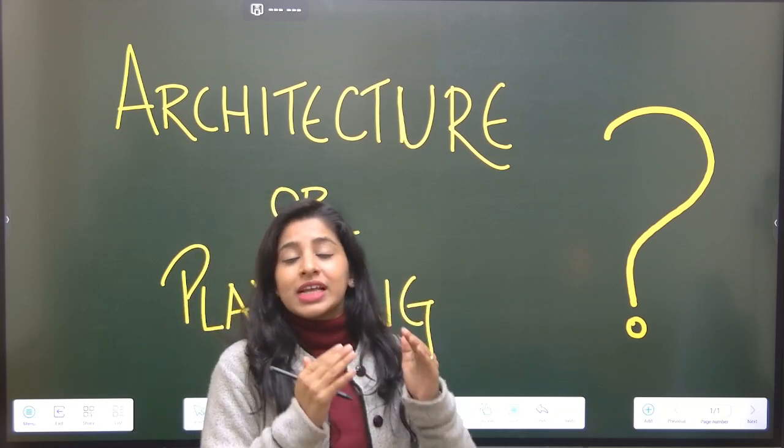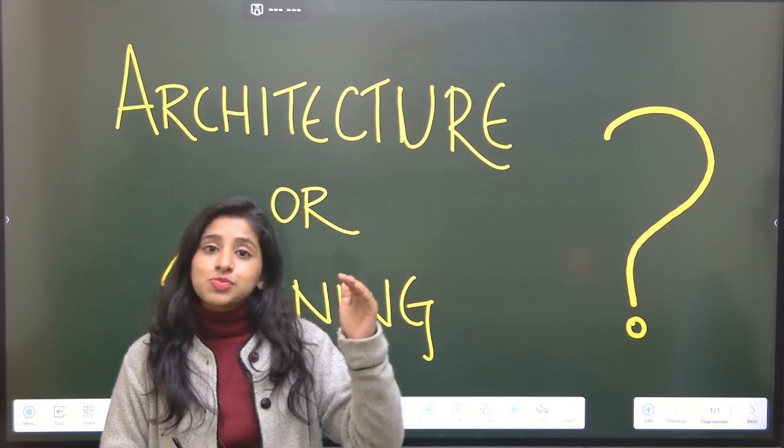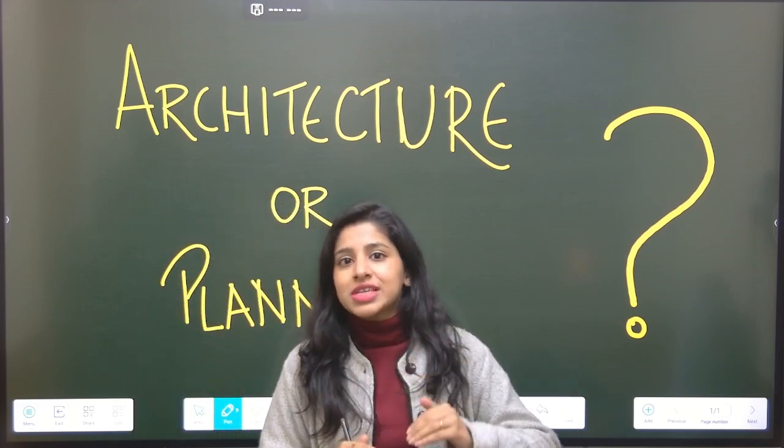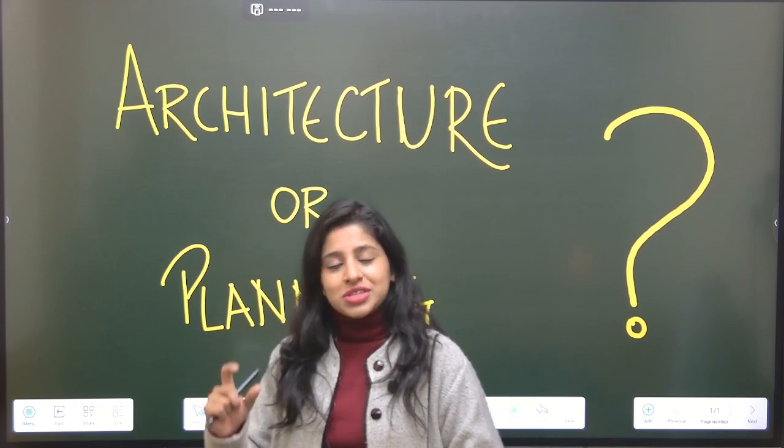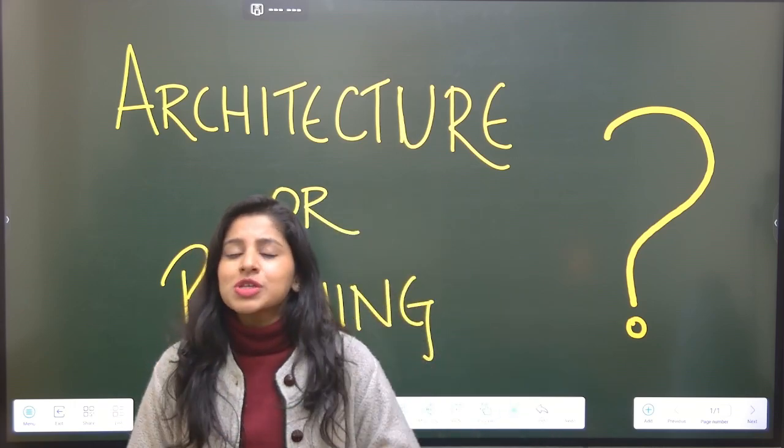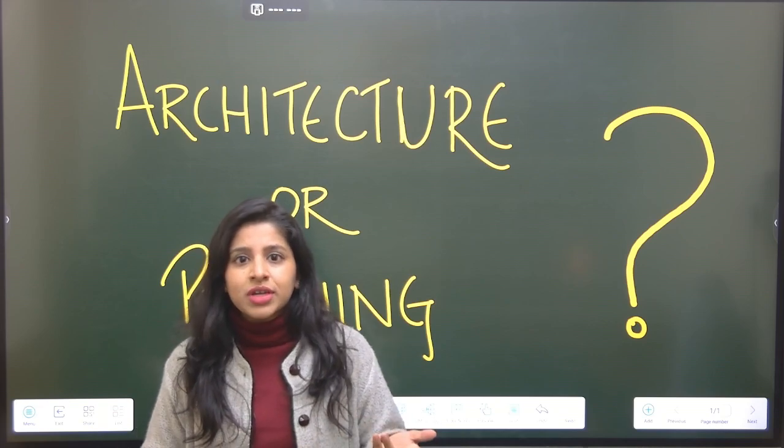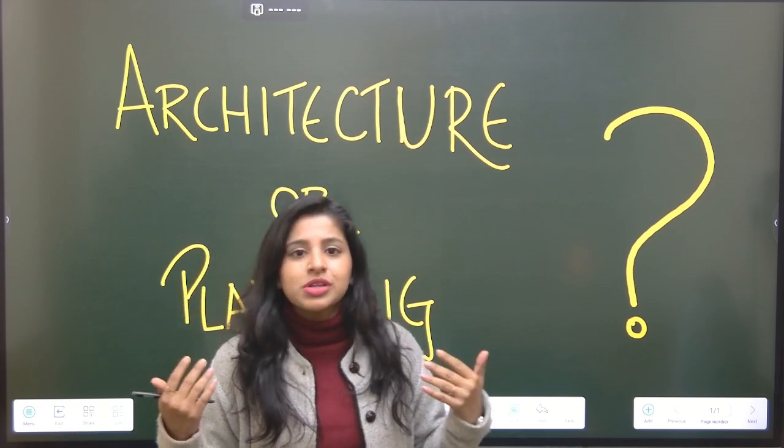The GATE syllabus that you get is divided into three sections: the common section, the architecture section, and the planning section. Now, you must be thinking, which one should we attempt and how are we going to decide that?